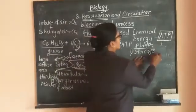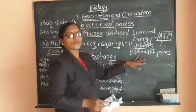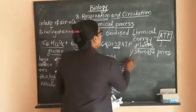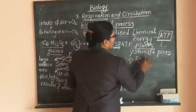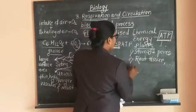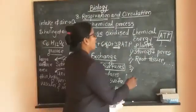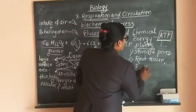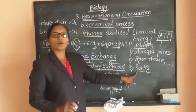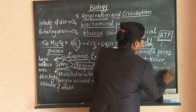In plants, gaseous exchange also takes place through root tissues. In the case of aerated soil, through the root tissues, gaseous exchange takes place. And in terrestrial plants, sometimes gaseous exchange takes place through minute pores present on the barks, and these minute pores are called lenticels.